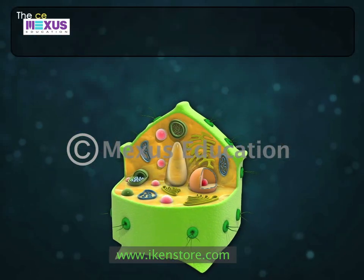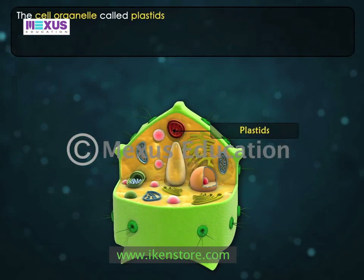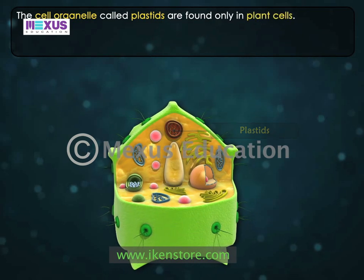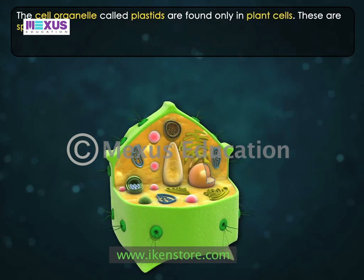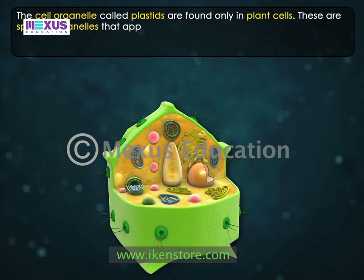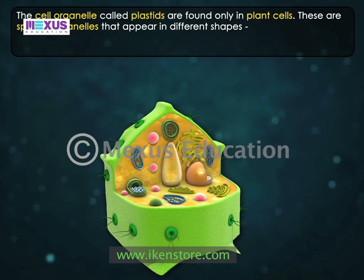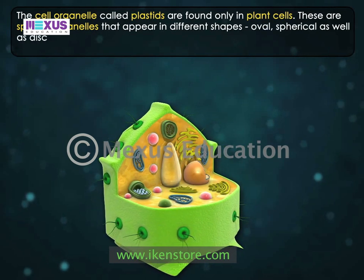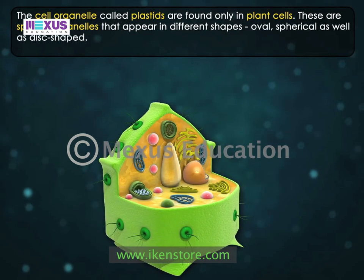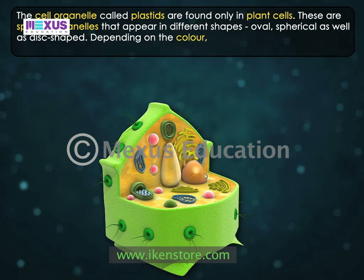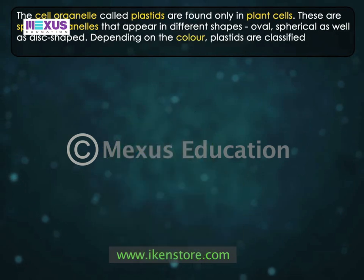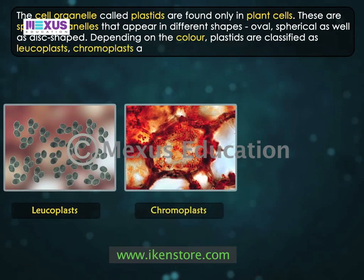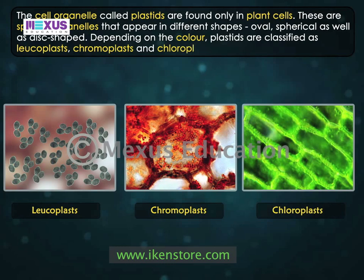The cell organelle called plastids is found only in plant cells. These are special organelles that appear in different shapes: oval, spherical, as well as disc-shaped. Depending on the color, plastids are classified as leucoplasts, chromoplasts, and chloroplasts.